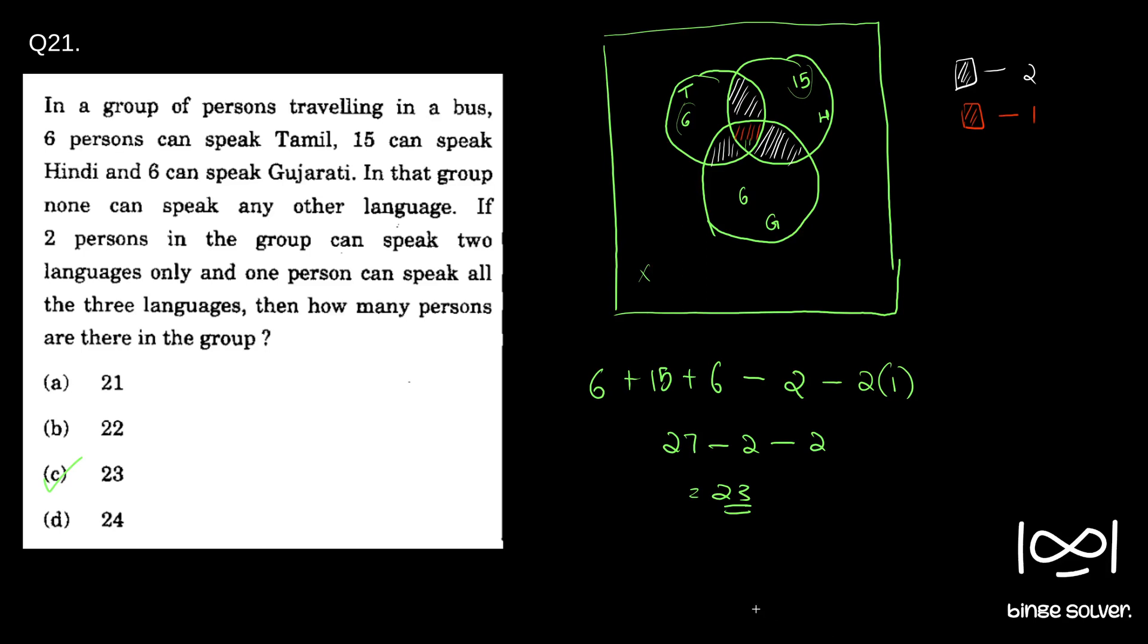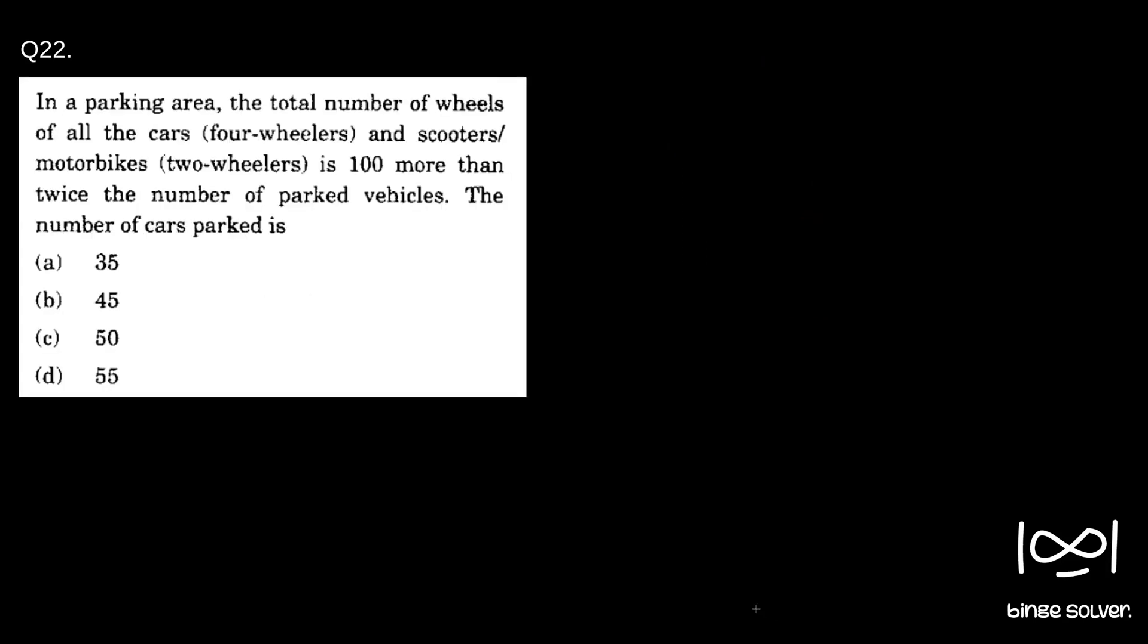Moving on to the next question, Question 22. In a parking area, the total number of wheels of all the cars and scooters is 100 more than twice the number of parked vehicles. The number of cars parked is...